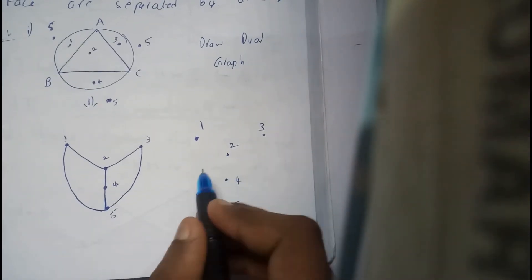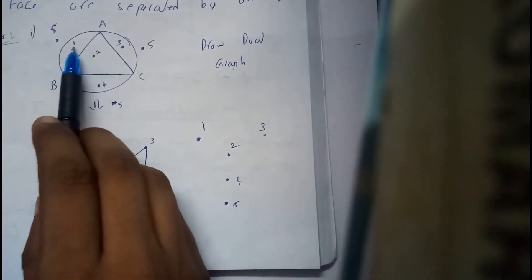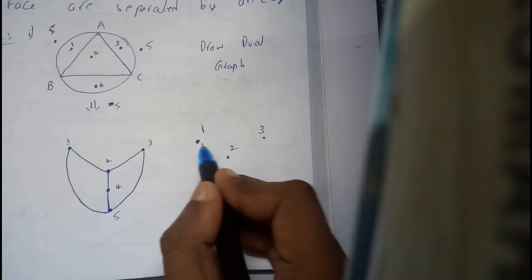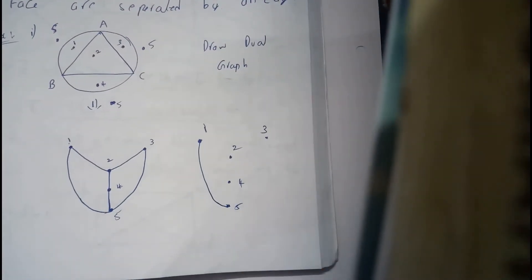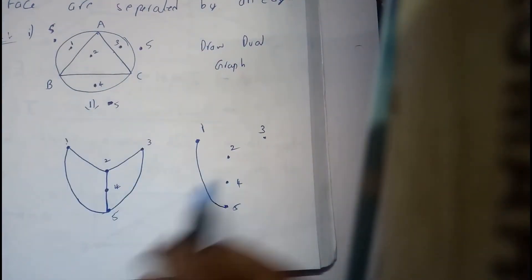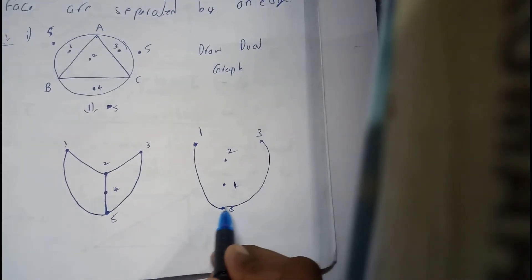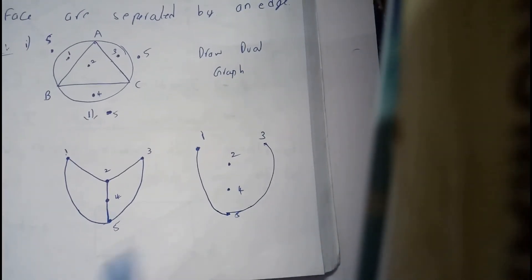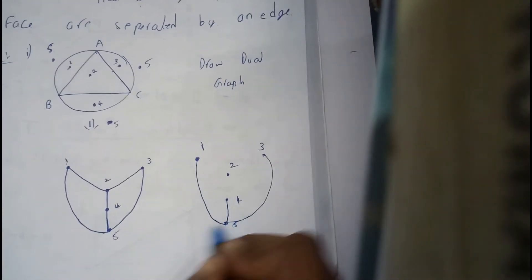Now draw the lines. One and five we are having an edge, so one and five, draw one. Next three and five we are having one, so three and five you draw one. Next four and five we are having one, so four and five you draw one.